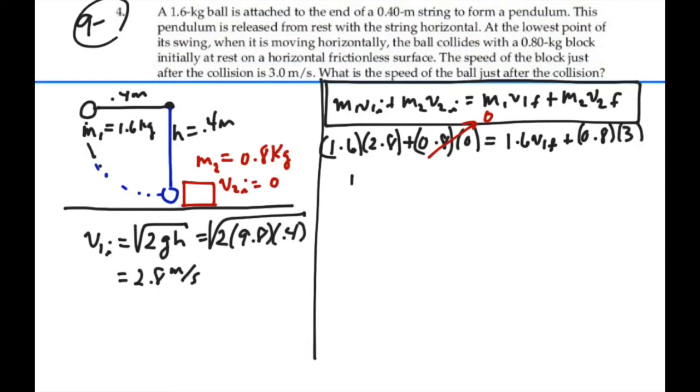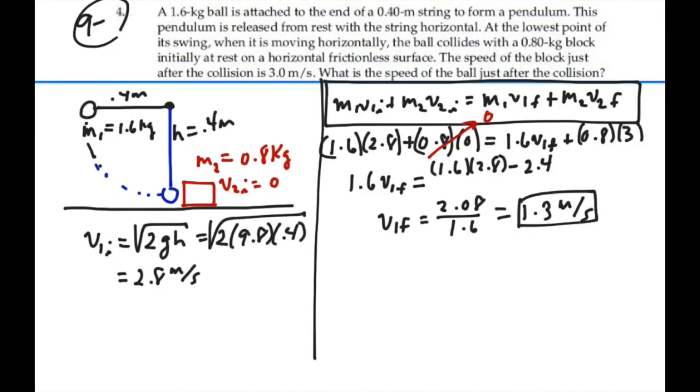So we will have that 1.6 V1 final is equal to 1.6 times 2.8 minus 3 times 0.8, which would be 2.4. So V1 final is going to equal, that's going to be 2.8 divided by 1.6. And I get 1.3 meters per second. So that is the final velocity of the ball just after the collision, 1.3 meters per second.